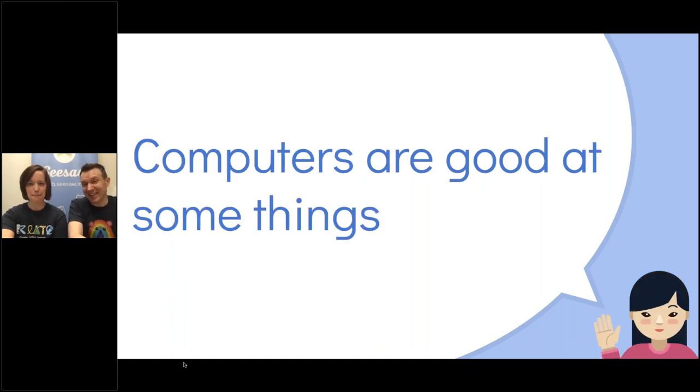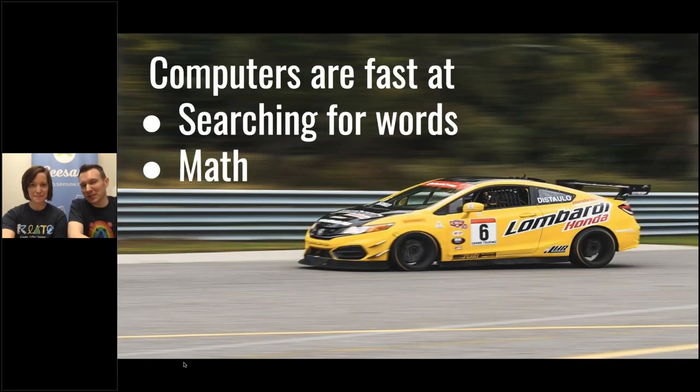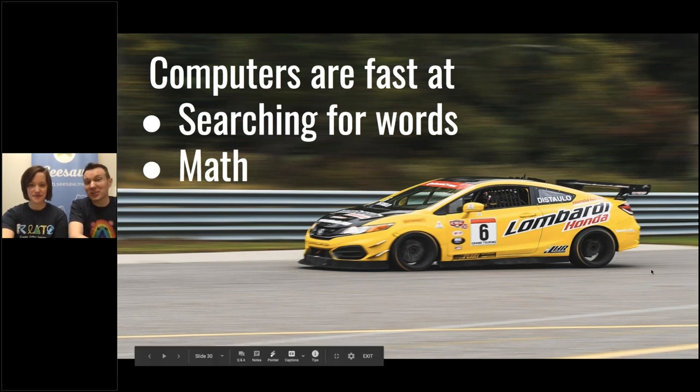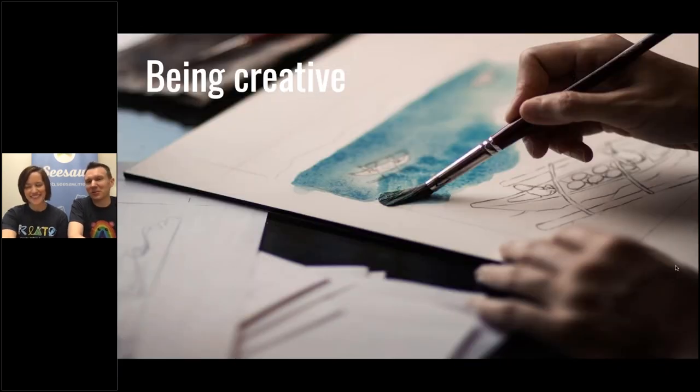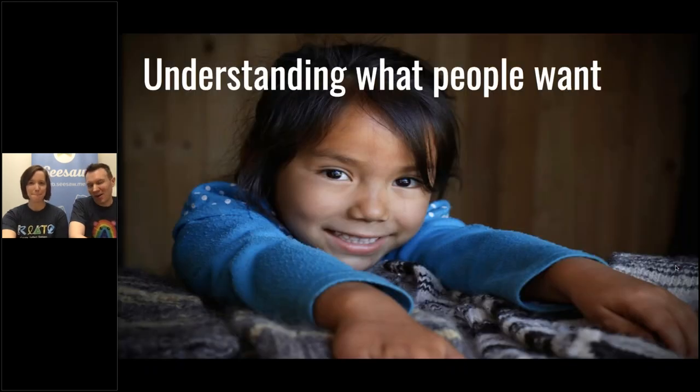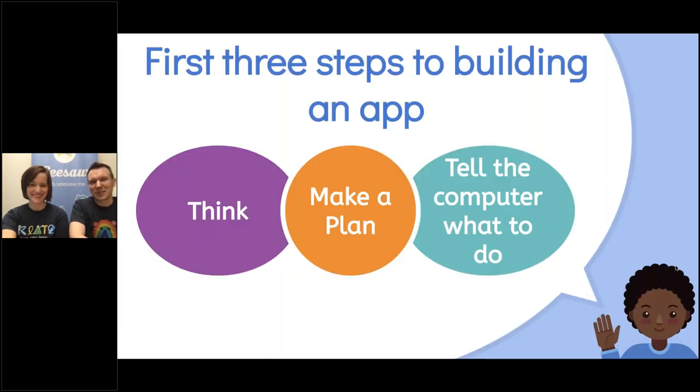Computers are really good at some things and not as good at others. Let's talk about that a little bit. So computers are really fast at math, like adding and subtracting and dividing and multiplying. They're also really good at finding words. But there are a lot of things that you are better at than computers are. One is being creative. Computers don't know what to do. They don't know how to solve a problem. So you get to be the creative person who comes up with that. They also don't understand what people want. They aren't people themselves. So they have no idea what a person actually wants. So that's the first step to building an app. We think about what problem we're trying to solve. We make a plan. We tell the computer what to do.